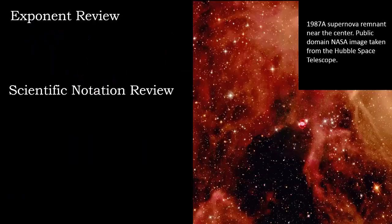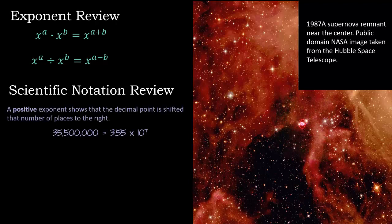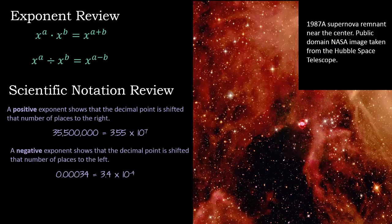First, let's review some exponent rules and some scientific notation rules. When we multiply, we add exponents. And when we divide, we subtract them. A positive exponent shows that the decimal point is shifted that number of places to the right in scientific notation. A negative exponent shows that the decimal point is shifted that number of places to the left in scientific notation.